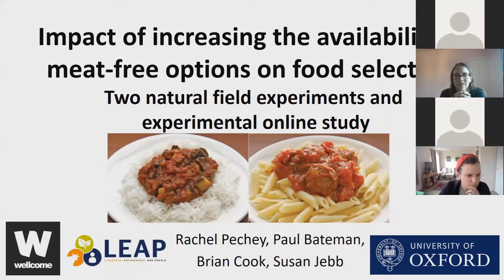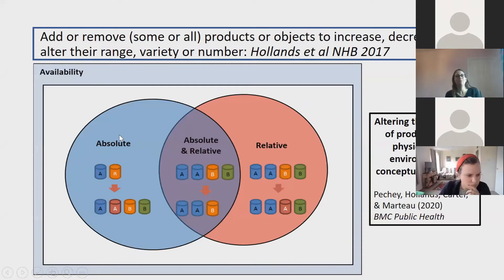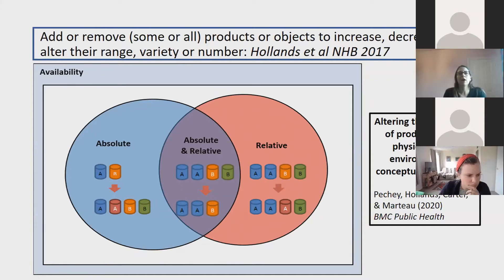Thank you very much. I'm basically going to be giving a whistle-stop tour today of some analyses we've done of two natural field experiments and one experimental online study, all looking at the impact of increasing the availability of meat-free options on food selection. What I'm really focusing on today is changing the availability in places like shops, restaurants, bars — thinking about adding or removing from the number or the proportion of a particular food item.